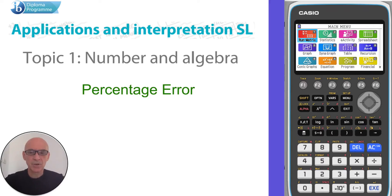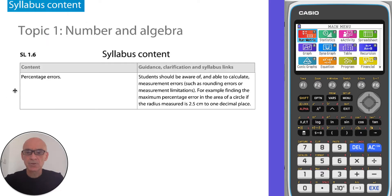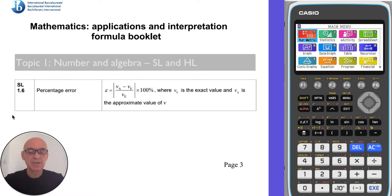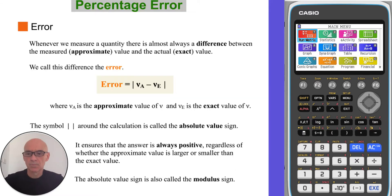In this video I'm going to talk about percentage error as shown in the syllabus. The formulas for the areas of plane shapes are shown on page 2 of your formula booklet, and the percentage error formula is given on page 3. Whenever we measure a quantity there is almost always a difference between the measured or approximate value and the actual or exact value. We call this difference the error.